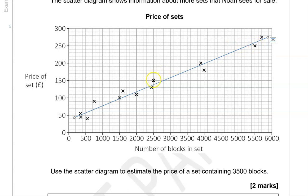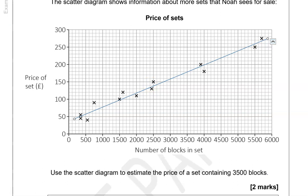So we're going to estimate the price of a set containing 3,500 blocks. Then we have a number of blocks instead. 3,500 is here, so going up to where it meets the line. So, that's about here, between 150 and 200. So, 160, 70, 80, 90, 200. So, this is 180 pounds.